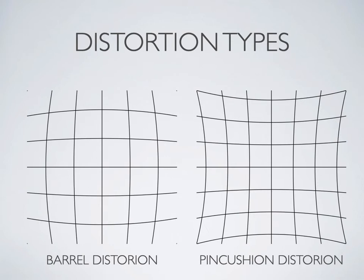In barrel distortion, the horizon curves so that the left and right edges bow down and the center bows up. In pin cushion, it's the opposite — the horizon bows in towards the center. What can generate these? In a myopic minus lens, there will be some minification, and the amount of minification is more obvious at the edge of the image — the corners of the image are drawn in more than the middle. So a minus lens is going to produce barrel distortion. Pin cushion is created when there is more magnification at the outside corners than in the center, which is produced by plus lenses.